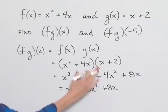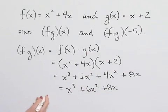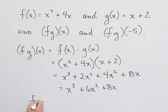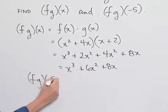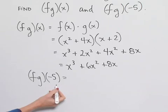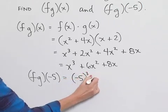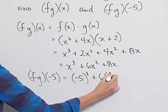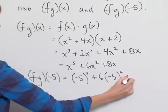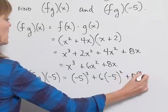We're now asked to find fg of negative 5. Well, one way to do that is to take what we just found for the function fg and substitute in negative 5. That is, we'll have negative 5 cubed plus 6 times negative 5 squared plus 8 times negative 5.